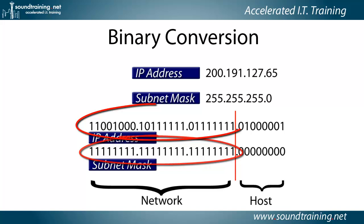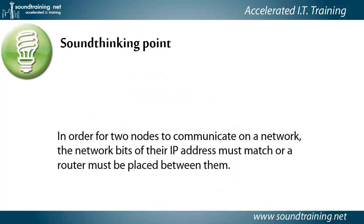Therefore, bits 1 through 24 in the IP address are network bits. In order for two nodes to communicate on an IP network, the network bits of their IP addresses must match, or a router must be placed between them.